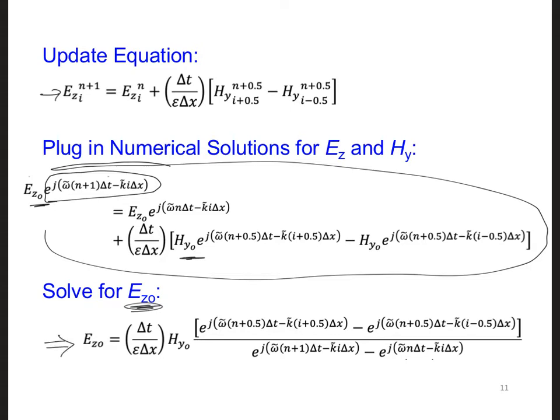Now, on the right side, we can cancel the common exponentials shared by all of the terms. So what's shared by all the terms is e to the j omega tilde n delta t and e to the minus j k tilde i delta x.